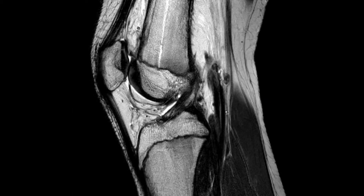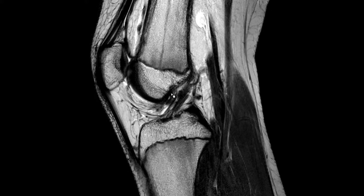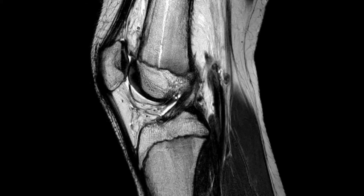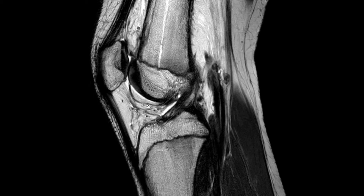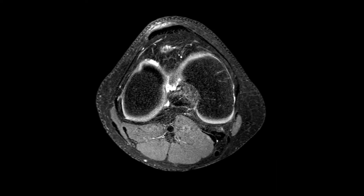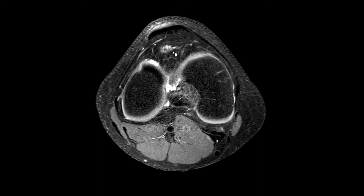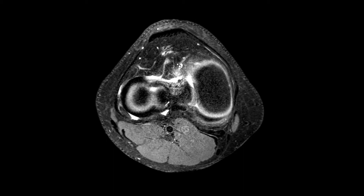This is a nice example of an infrapatellar plica, also known as the ligamentum mucosum, and it has two components. One is the intercondylar part that is easy to see if present — it can be thick or thin. Then you have a distribution of fibers into the Hoffa fat pad, and sometimes you can appreciate them running upward. Frequently you can see edema around the infrapatellar plica or centrally in the Hoffa fat pad, and there are some publications suggesting this might represent a sprain of the infrapatellar plica causing symptoms, especially when no other finding is present — though this is debatable.